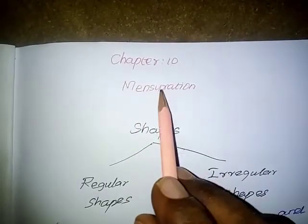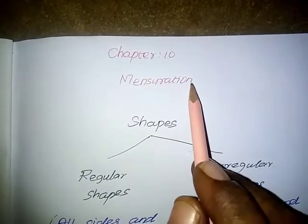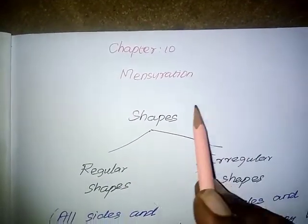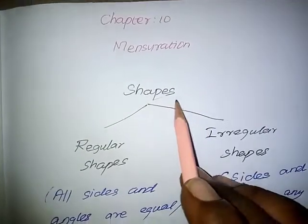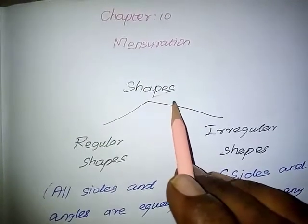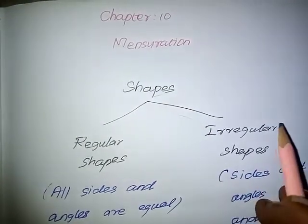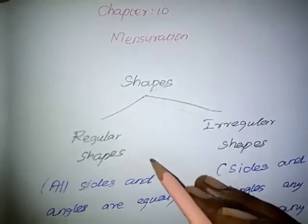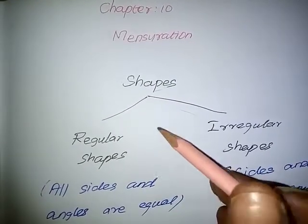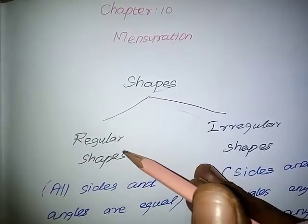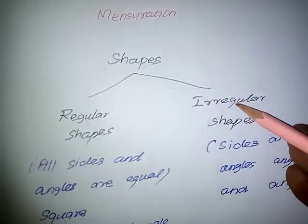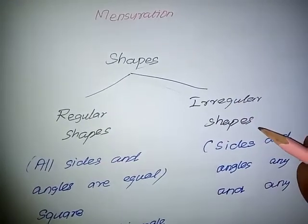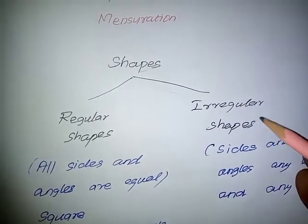Chapter 10: Mensuration. Shapes are generally divided into two types: one is regular shapes, and another one is irregular shapes.